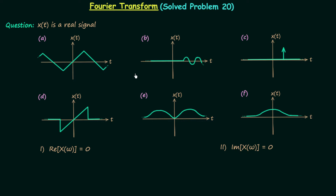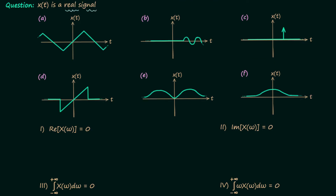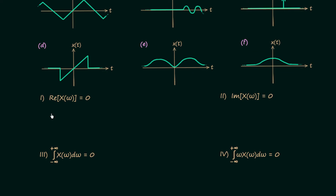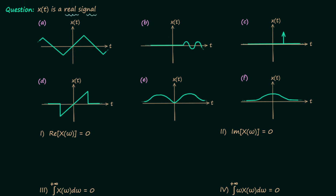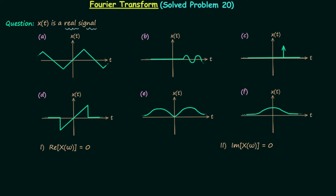In this question we have 6 signal waveforms. All the time domain signals are real in nature and the question has 4 different parts. We will answer all 4 parts one by one.